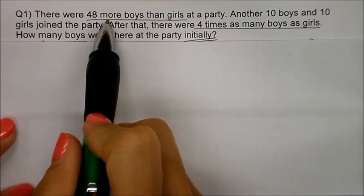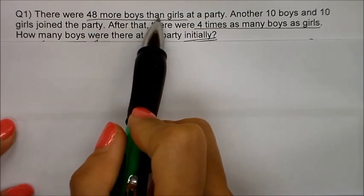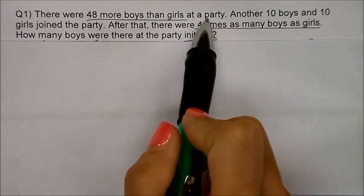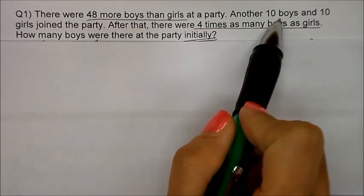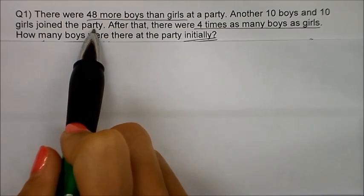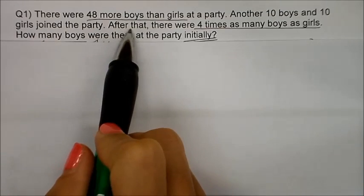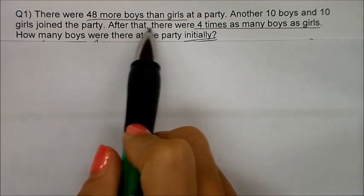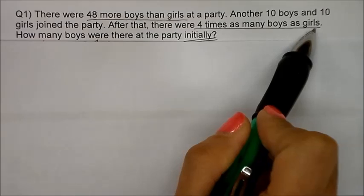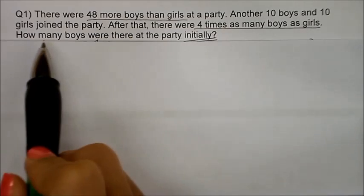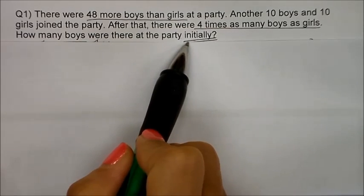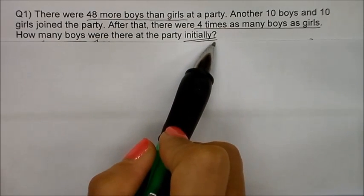There were forty-eight more boys than girls at the party. Another ten boys and ten girls joined the party. After that, there were four times as many boys as girls. How many boys were there at the party initially?